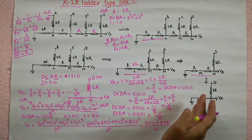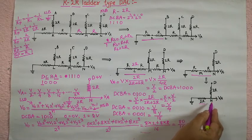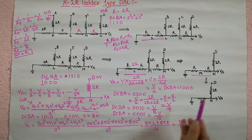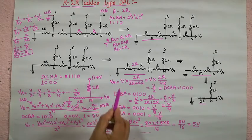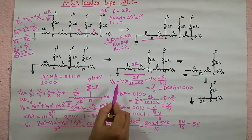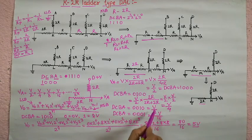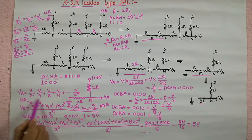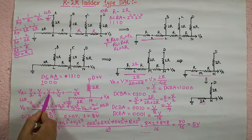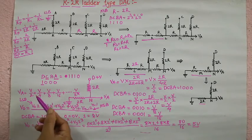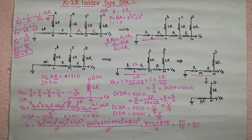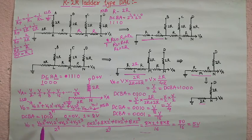This is the R2R ladder type DAC. By reducing the ladder network using series and parallel combinations, the equivalent circuit shows the resistance between any node and ground is 2R, with additional resistance of 2R between voltage source and node. Individual bit output voltages are V/2, V/4, V/8, and V/16. The total output voltage is the sum of these individual output voltages. Use the formula to calculate output voltages for each bit and add them for the final answer.